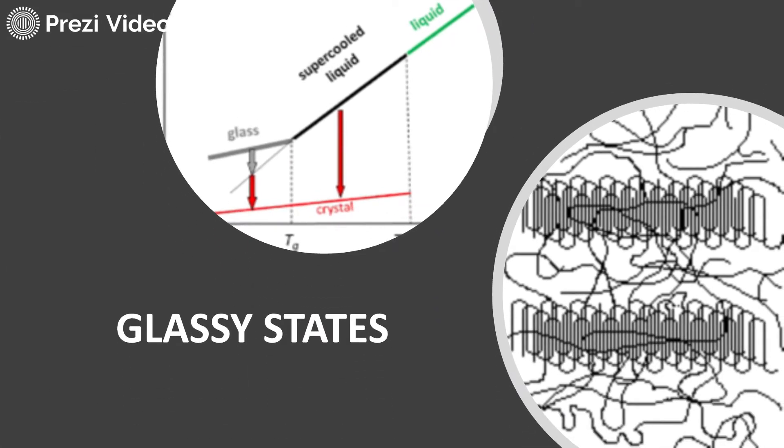In this slide you can see Tg written on the graph. This is the glass transition temperature. Below this temperature the glass exists in the solid form, but above this temperature it moves towards the super-cooled liquid state. This is again a crystal state, similar to what we discussed about liquid crystals in our earlier session, and above that state it moves — as the green line shows — into the liquid phase.